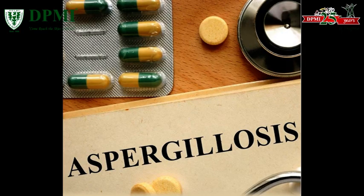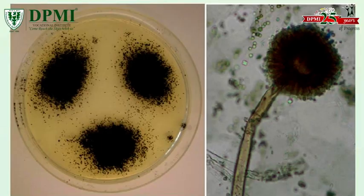Treatment: a fungus ball is usually not treated with antifungal medicines unless there is bleeding into the lung tissue. In such a case, surgery and medicines are needed. Invasive Aspergillosis is treated with an antifungal medicine.